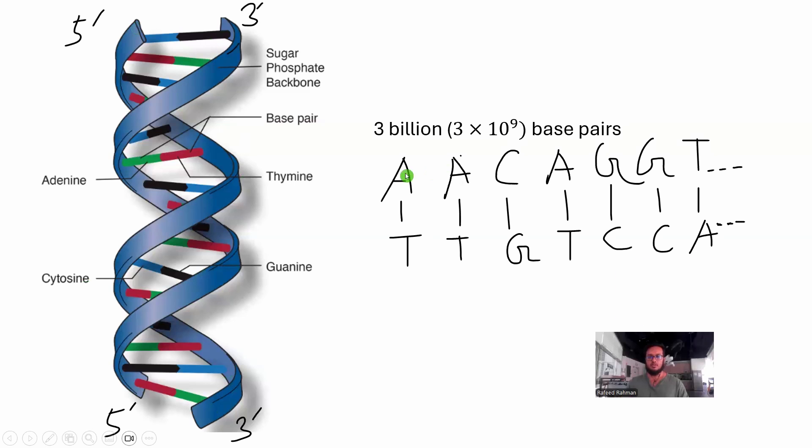So let me show an example right here. Maybe in one of the strands, maybe in this five prime, three prime strand, we have A, A, C, A, G, G, T, and we will continue. Then in the other strand, we are going to have T, T, G, T, C, C, A, because A always binds to T, and C always binds to G. So this is the complementary strand. And you have to remember that DNA is a very long string. It is basically 3 billion base pair. So it is 3 into 10 to the power 9, basically. So which is extremely large.